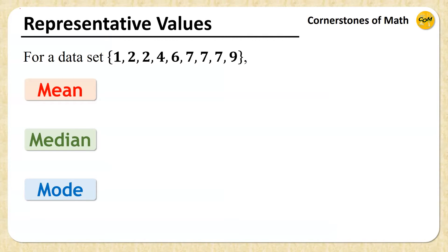Hello, and welcome to yet another video of Cornerstones of Math. The main topic of today's video is representative values — some values that we use in statistics to represent a given data set. And perhaps the three most common examples of such values are mean, median, and mode, which students may learn during their pre-college courses.